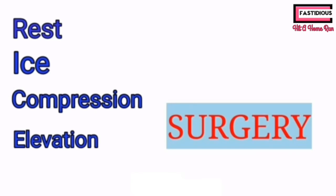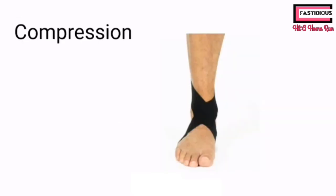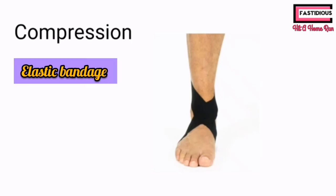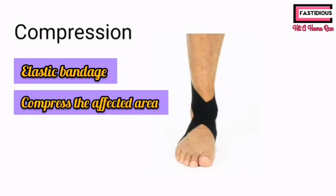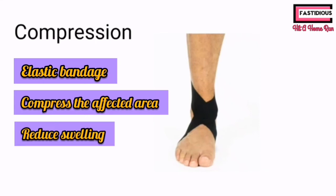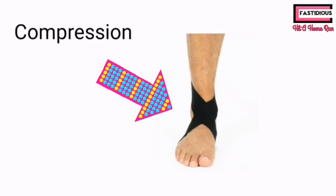The third treatment is compression. Compression reduces swelling by wrapping the affected area with an elastic bandage. This elastic bandage compresses the affected area and reduces swelling. For example, the ankle is compressed with a bandage to treat the sprain.